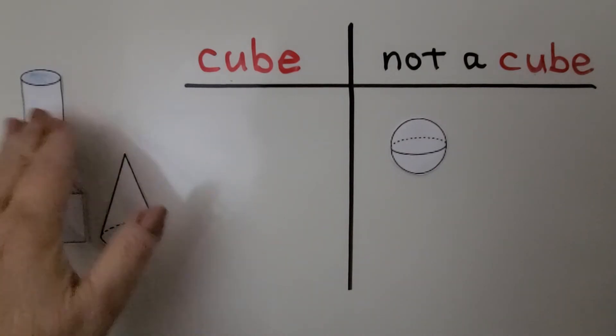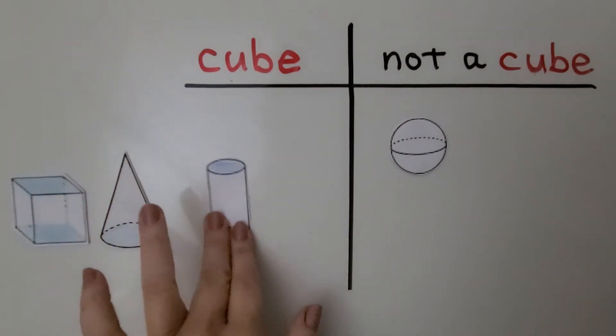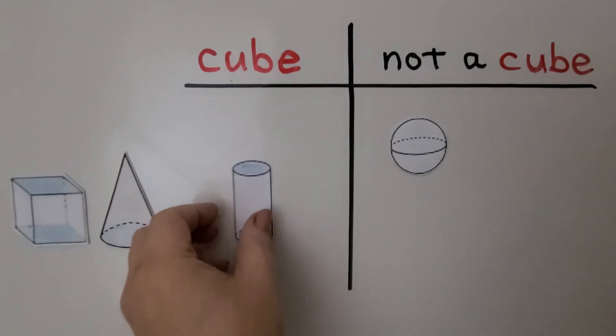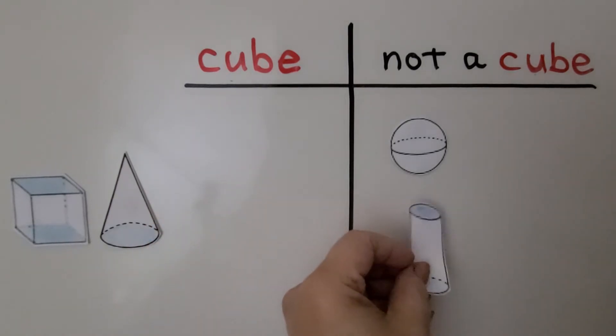Is this a cube? I see a flat side on the top and on the bottom. That's only two flat sides. That's not a cube. That's a cylinder. We can put it into the set of not a cube.